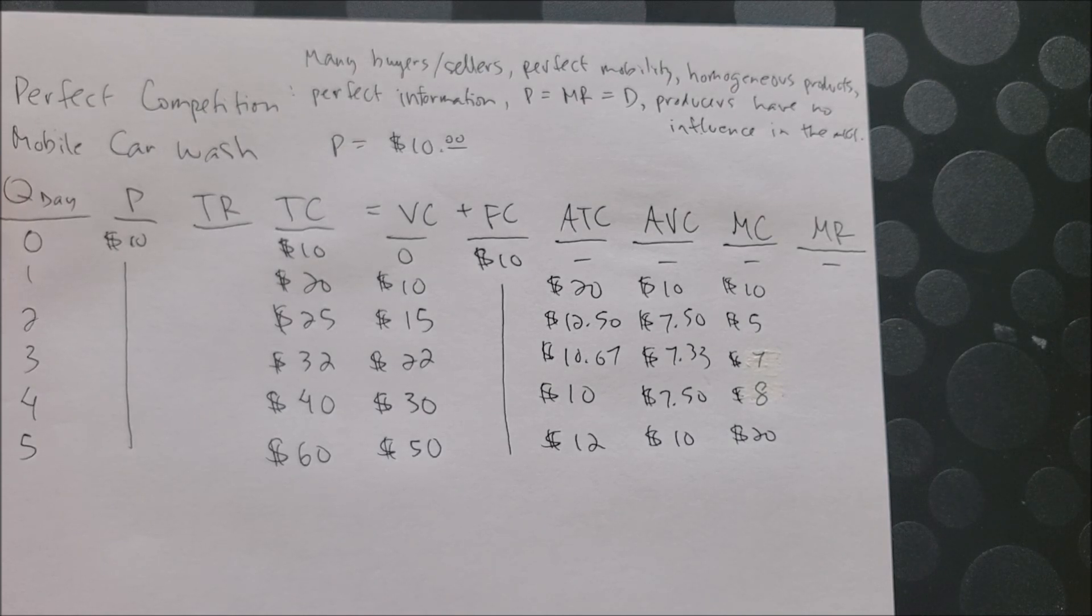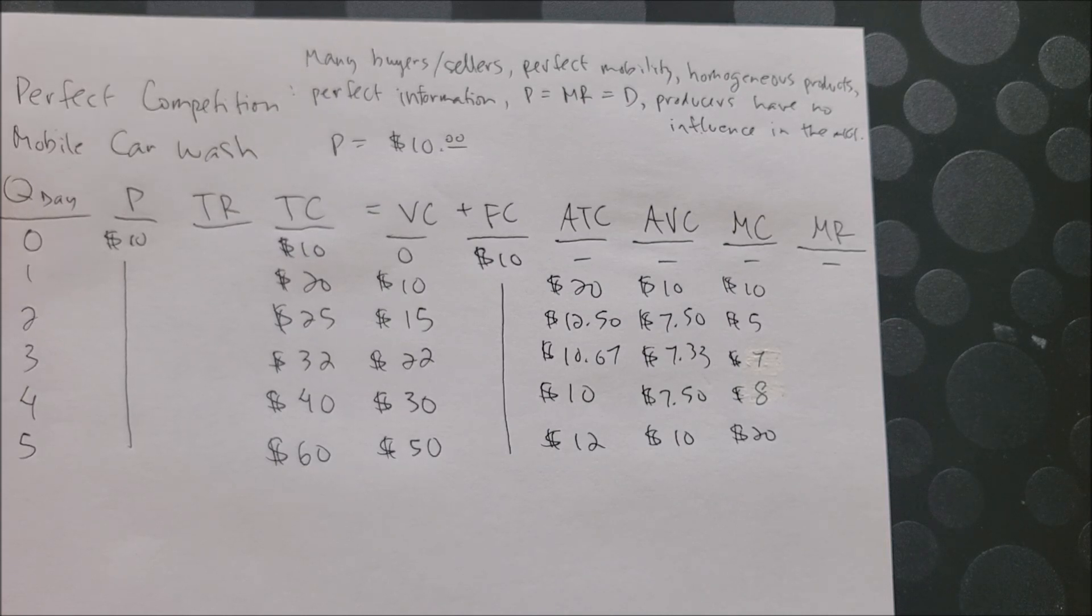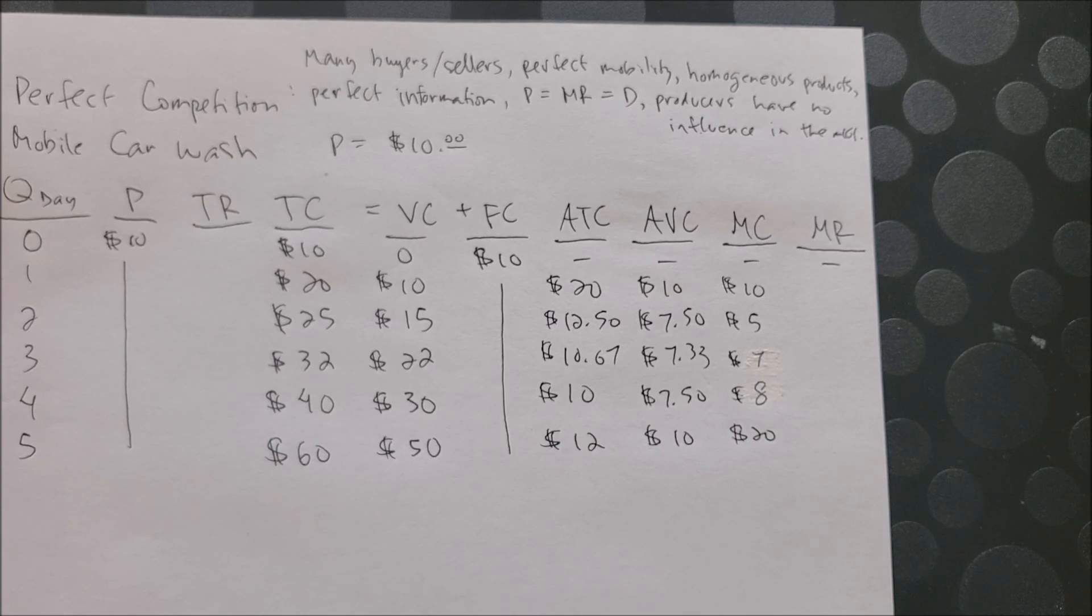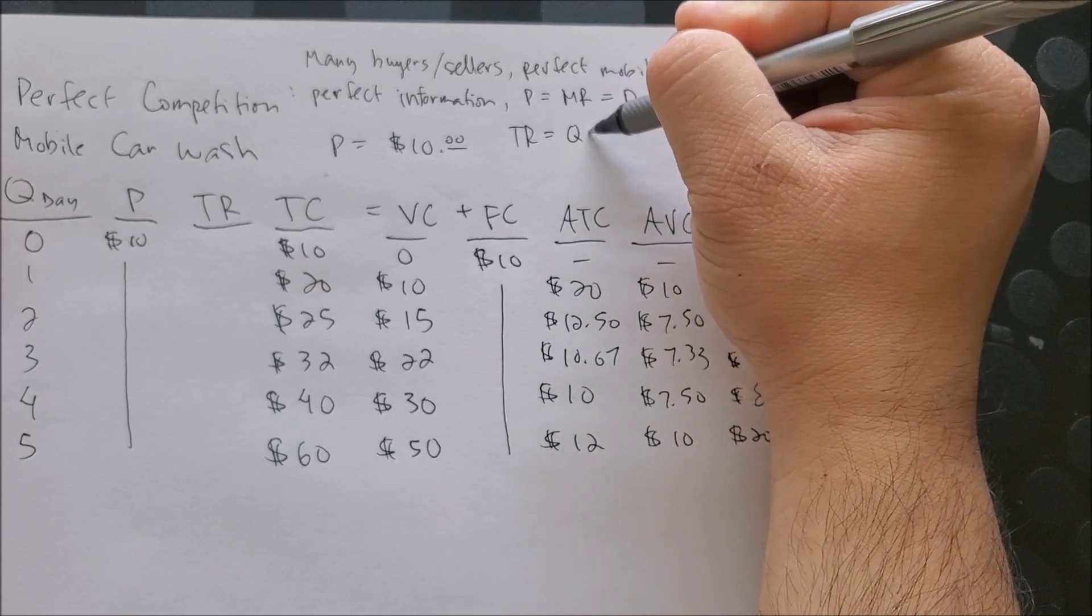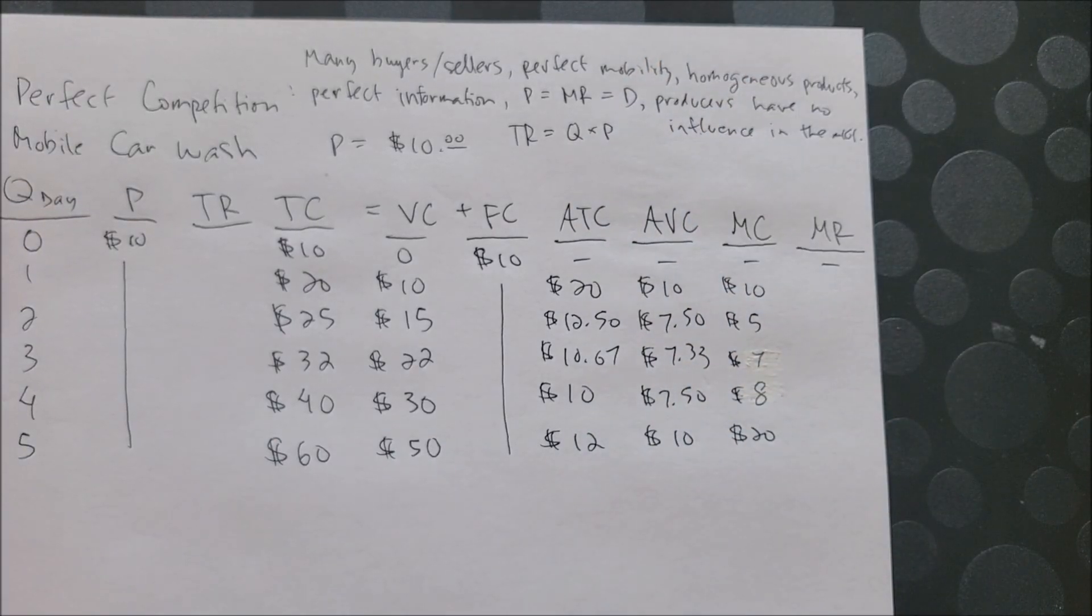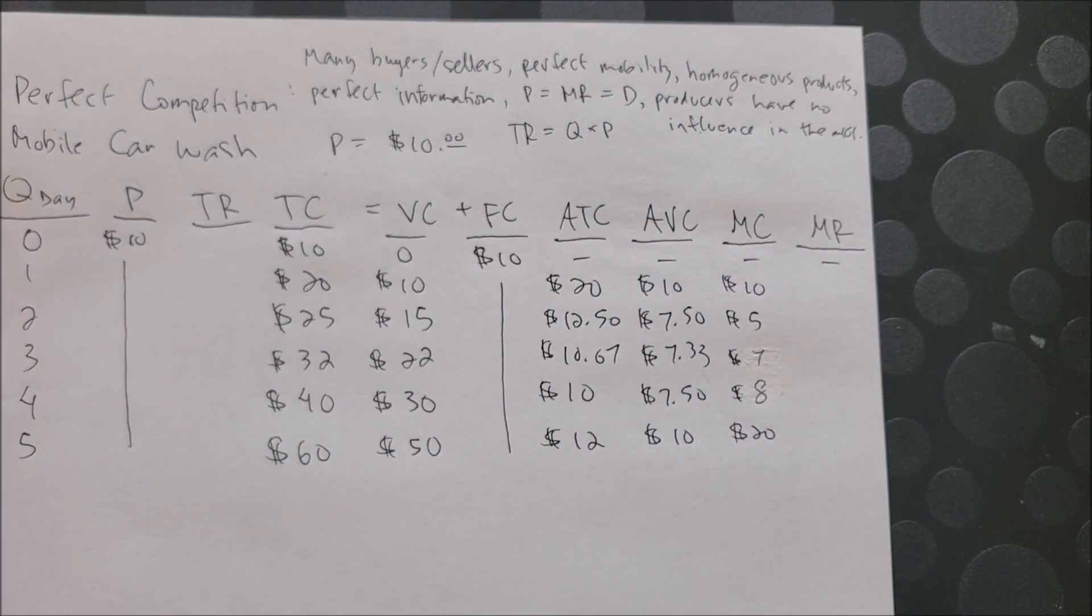Now more importantly, what we want to know is what is the total revenue that you are going to come up with after washing five cars in one day. So now that we have price given, we can then use the calculation of price times quantity to get total revenue. In other words, total revenue is equal to quantity times price. So go ahead and take the time now to do that for TR on that column.